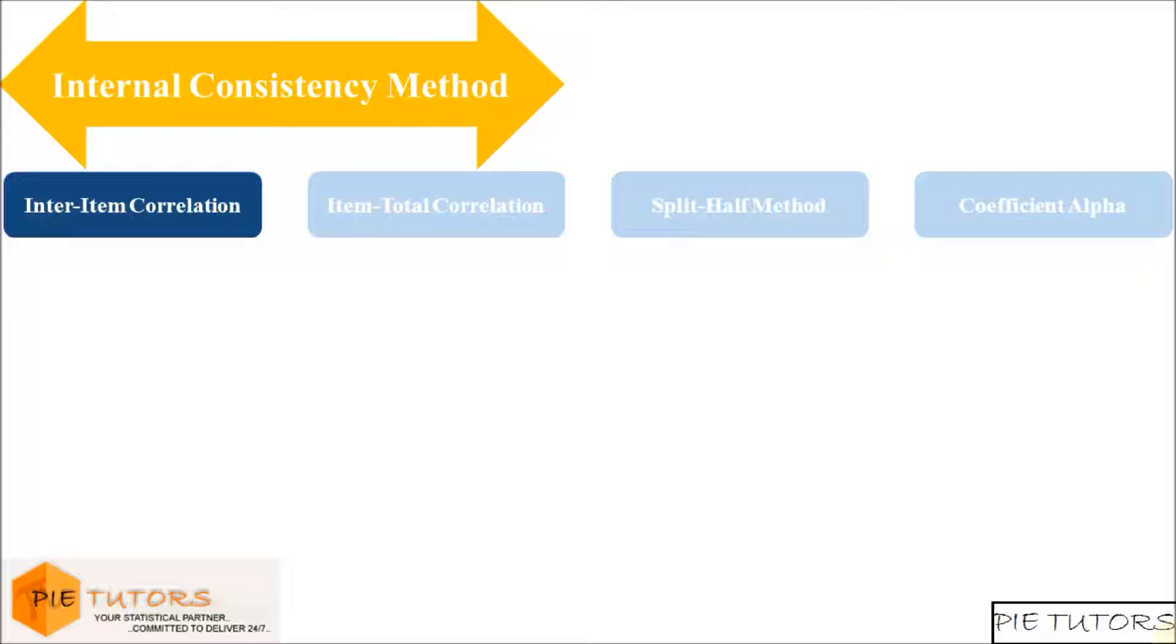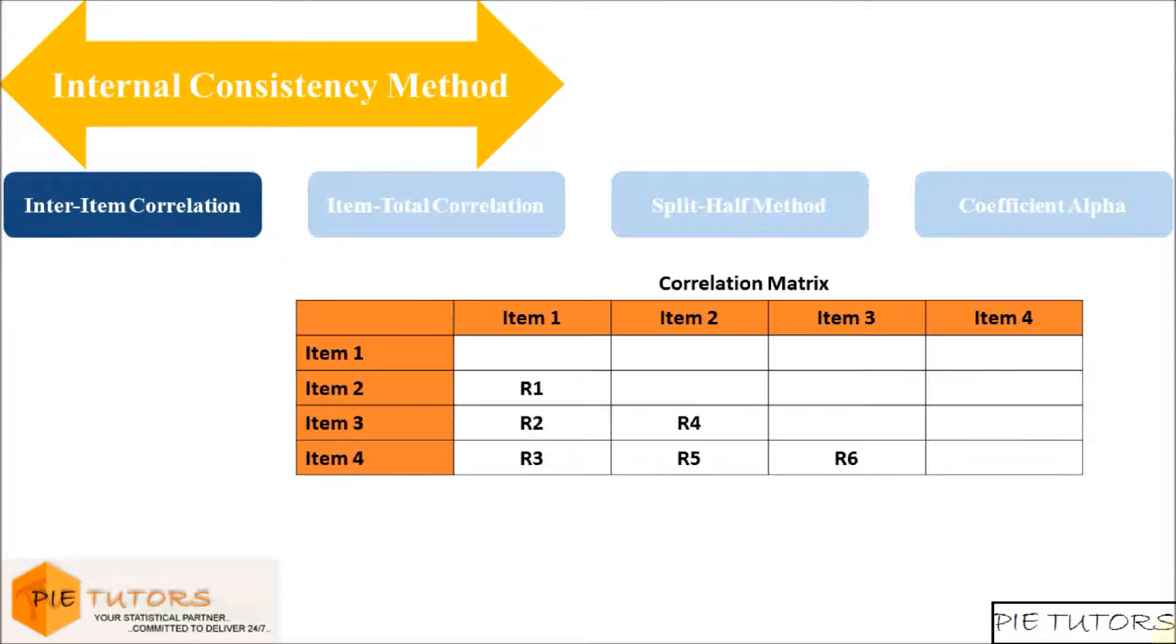Inter-Item Correlation. For a measure to be reliable, the estimates of reliability are based on the average inter-correlations among all the single items within a test.